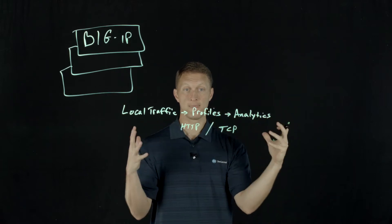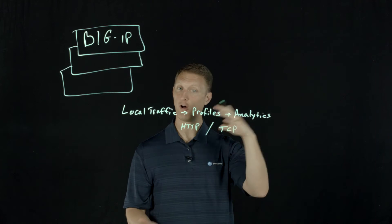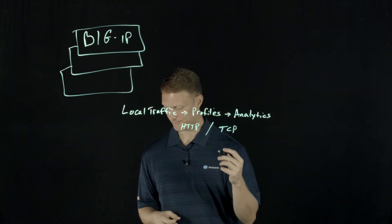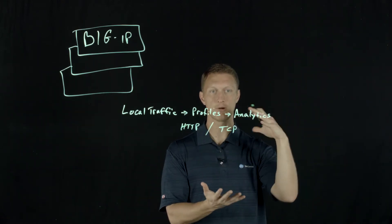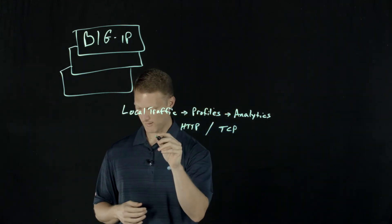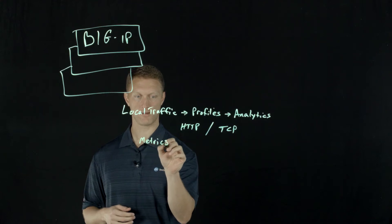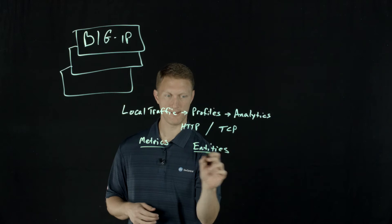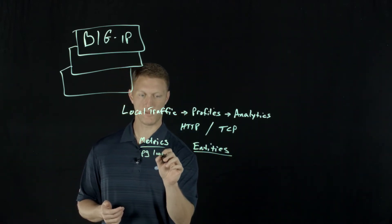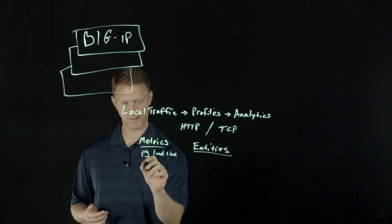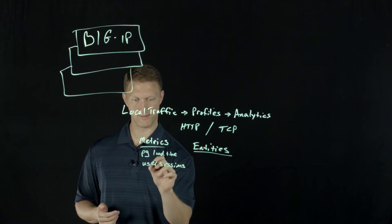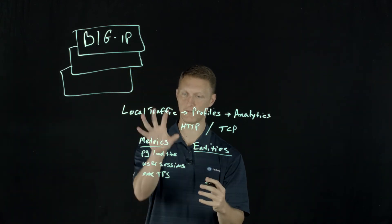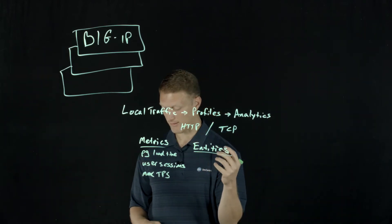Once you're in those profiles you can create a profile to do all these different kinds of things. The statistics in the analytics profile are broken into two categories: Metrics and Entities. Metrics are things like page load time, user sessions, max transactions per second, and throughput — those are some of the metrics you can look at.